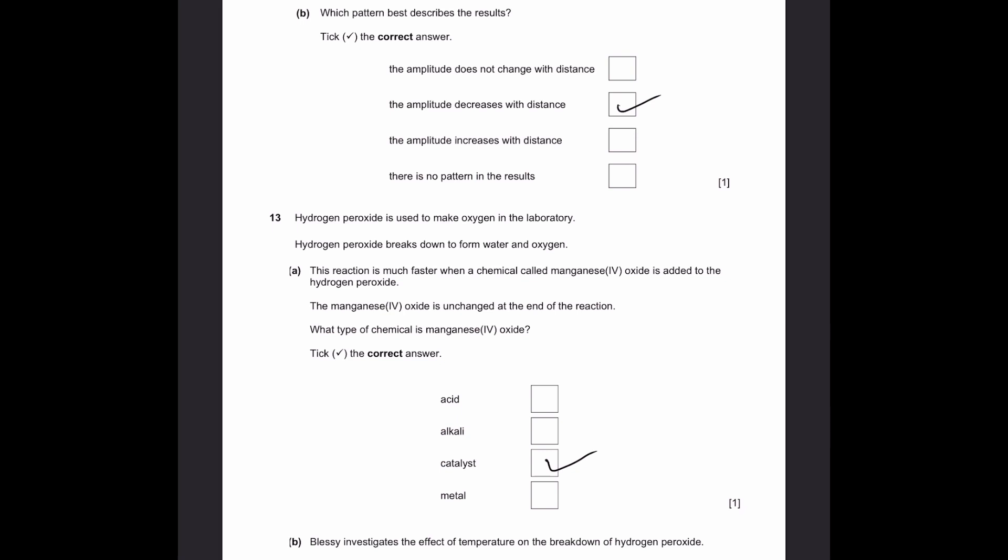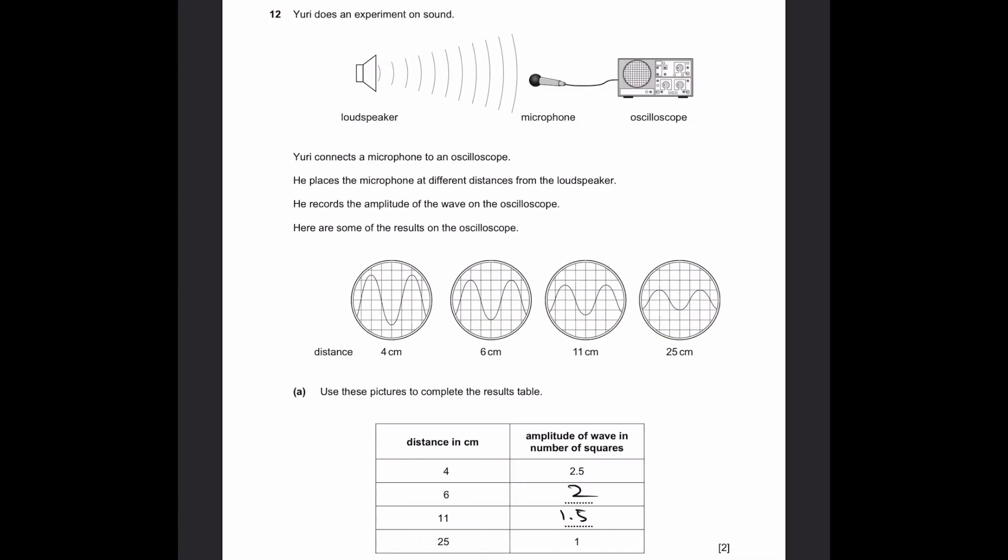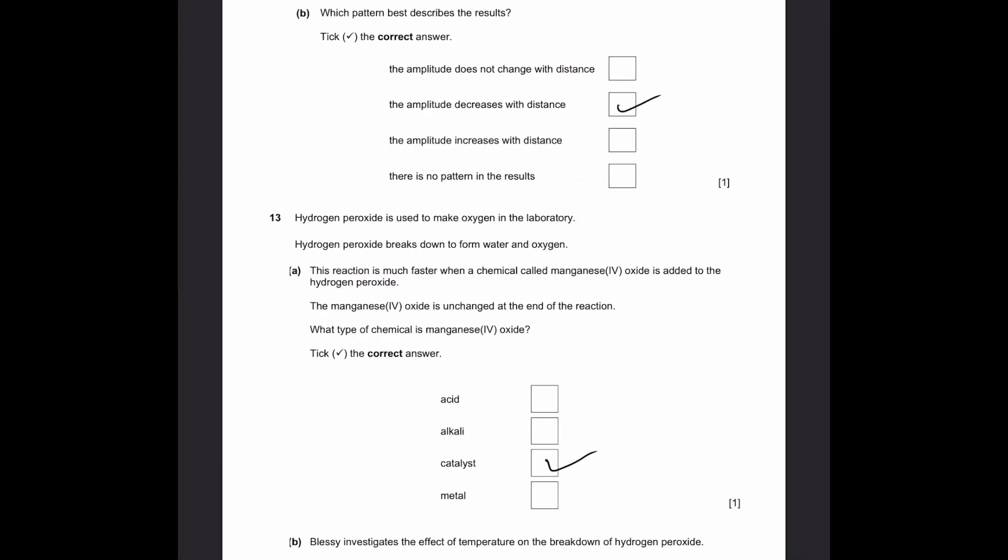Question B. Which pattern describes the results best? Tick the correct answer. The amplitude does not change with distance, decreases with distance, increases with distance, or there's no pattern. If the distance increases, the amplitude decreases. So the amplitude decreases with distance, the second option.